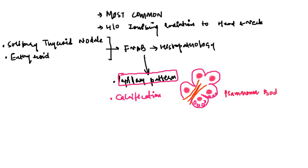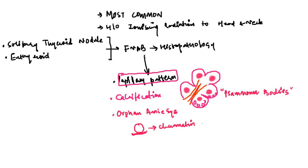There are various other lesions in which psammoma bodies are found, which will be discussed in another video. The third histopathological feature is what is called the Orphan Annie nucleus. Within the nucleus of the follicular cells, the chromatin is very fine, and as a result when we see the nucleus under the microscope it looks transparent. This arrangement is called the Orphan Annie nucleus because it resembles the eye of a cartoon character called Orphan Annie.